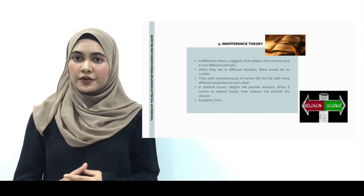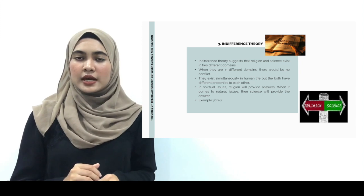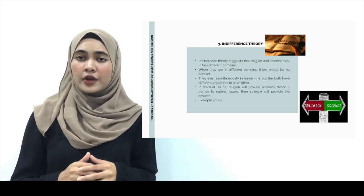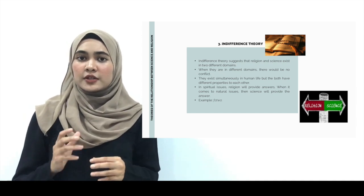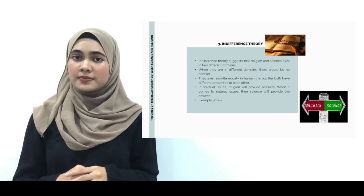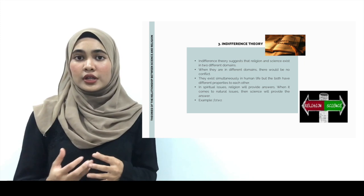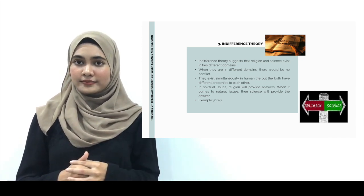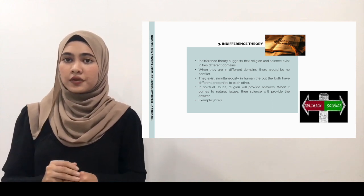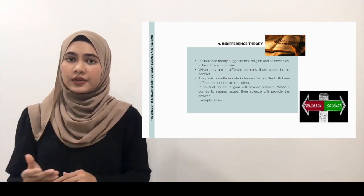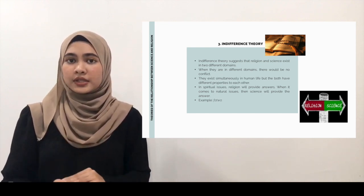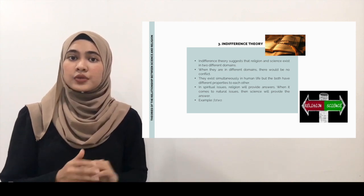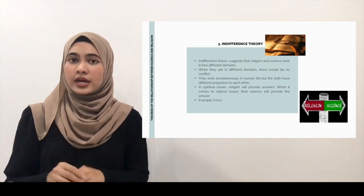The last theory is indifference theory. The indifference model is where both science and religion make declarations that are completely unrelated to each other. Science is focused on classification of empirical observations, while religion is focused more on ethics, ritual, and they have no empirical enhancement. As an example, building a house only involves science such as physics and mathematics and is unrelated to religion. Indifference theory suggests that religion and science exist in two different domains. When they are in different domains, there will be no conflict. They exist simultaneously in human life, but they both have different properties. In spiritual issues, religion will provide the answers. When it comes to natural issues, science will provide the answer.